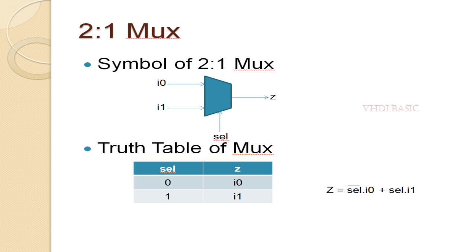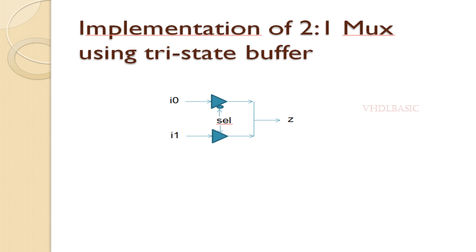In the 2-to-1 MUX, I0, I1, and select are the inputs and Z is the output. If you see the truth table: whenever select is 0, whatever is present in I0 will be assigned to output Z; whenever select is 1, I1 is assigned to output. The Boolean expression is: Z = not-select · I0 + select · I1.